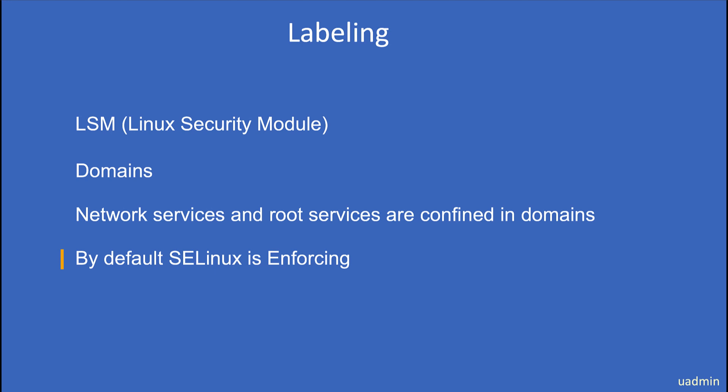In the previous example we used the web server to make it listen to a different port than the original ports, which resulted in a denial. We fixed that by adding the port to the domain. Now in this discussion we're again going to use the web server, but this time we will use the document root of the web server to explain the necessity to change the labels on disk to allow a new configuration. So we're actually going to change the document root of HTTPD.